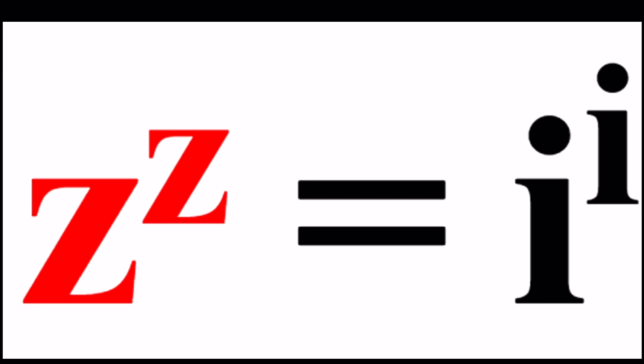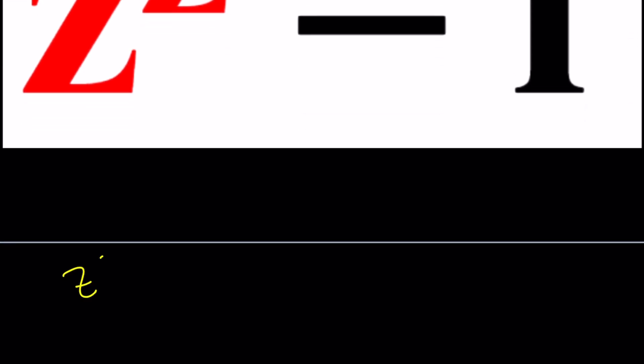Anyways, we have this equation z to the z equals i to the i and to solve this problem we're going to invoke the Lambert W function. You probably knew that because anytime you have z to the z, that's what happens. Now to be able to solve this problem, obviously, we're going to be doing some natural logs and you probably have an obvious solution at this point. Think about it.